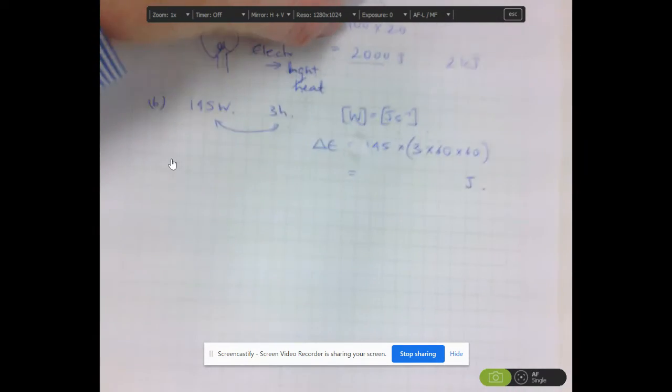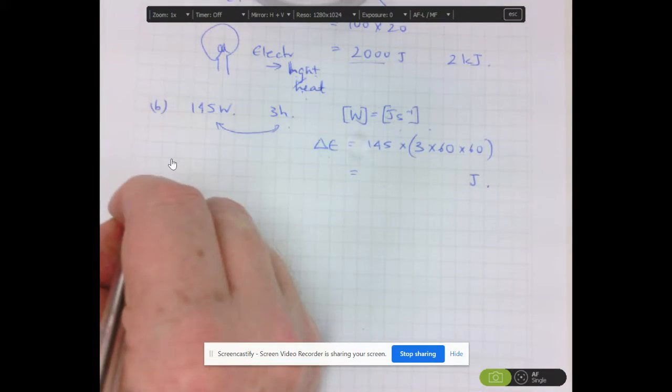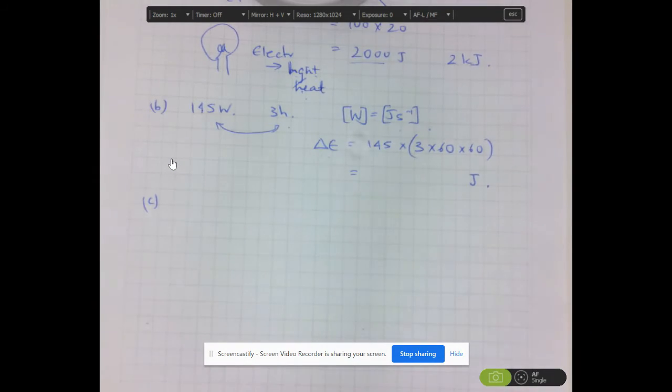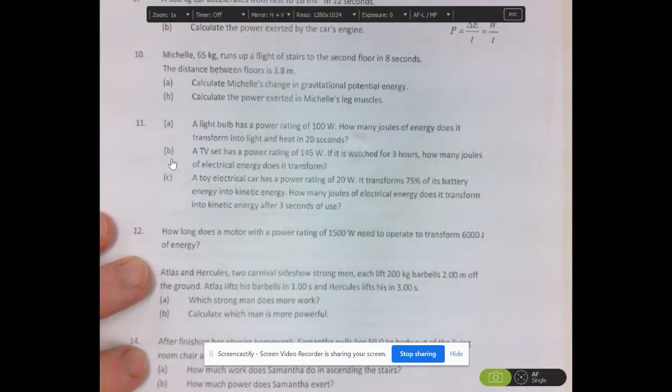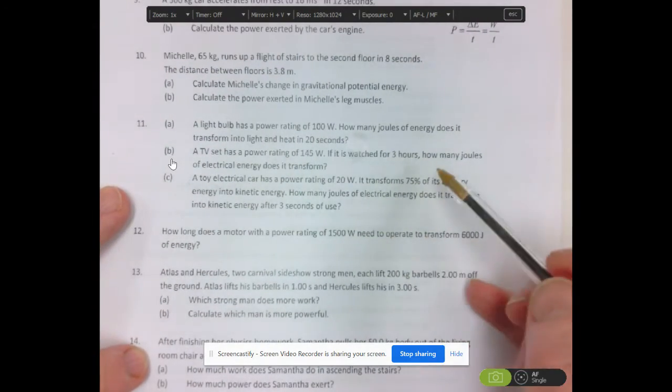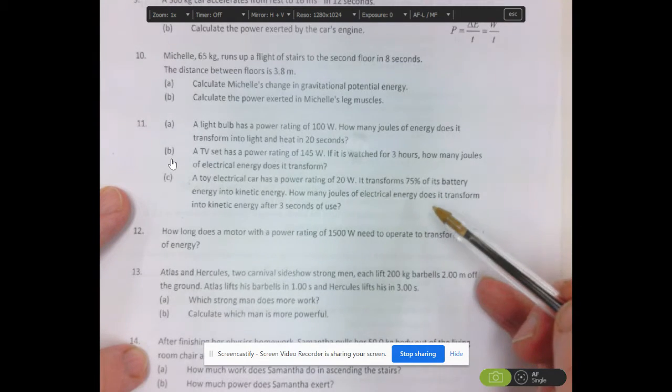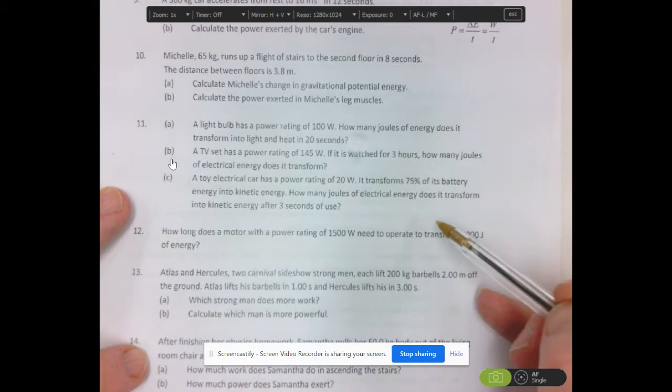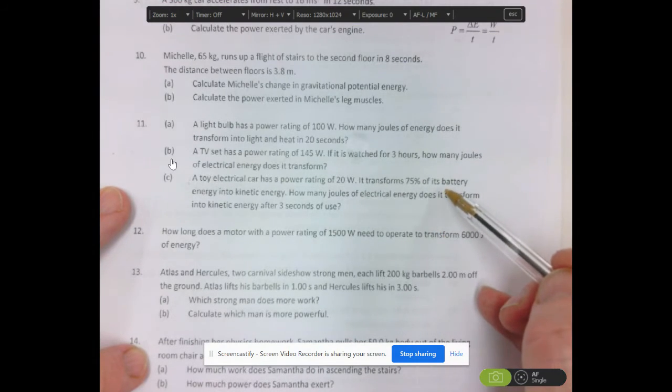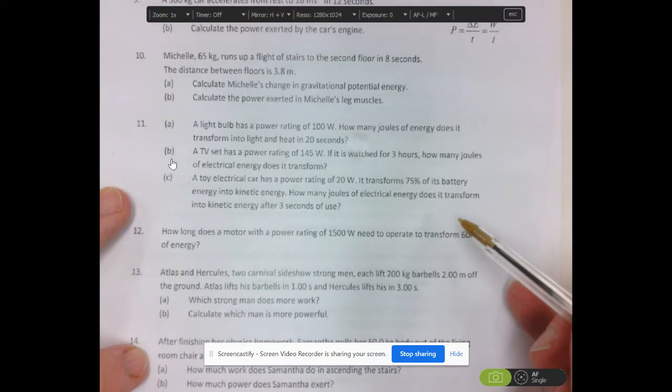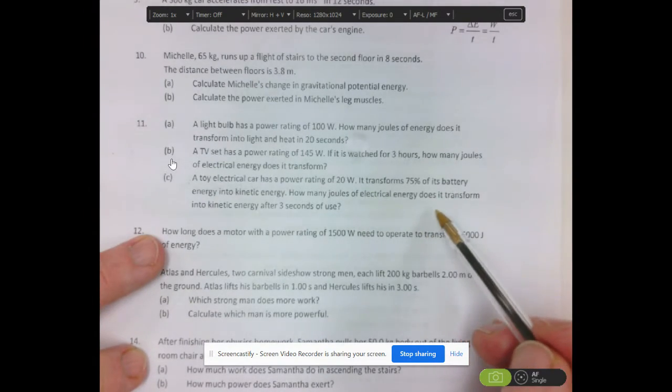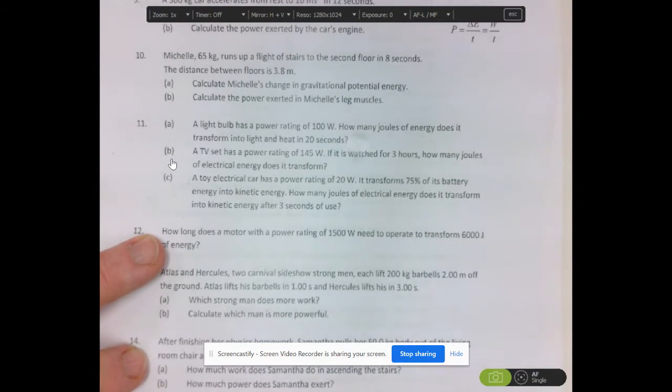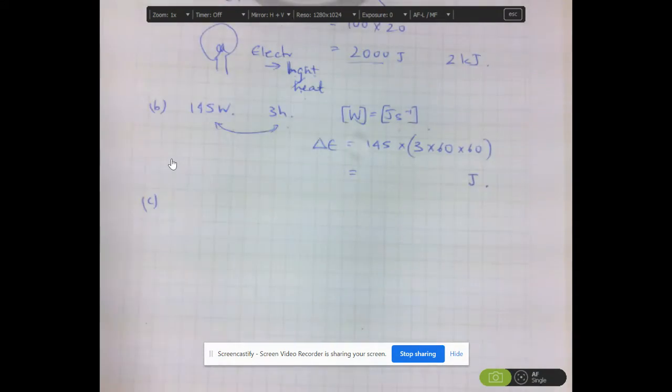Question C, 11C here, has a percentage of the final value being removed. So let's have a look at the question itself. A toy electrical car has a power rating of 20 watts. It's transforming 75% of the battery energy into kinetic energy. So what we can do is pretend that it does 100% and then reduce it down to 75%. So how many joules of electrical energy does it transform into kinetic energy after three seconds of use?